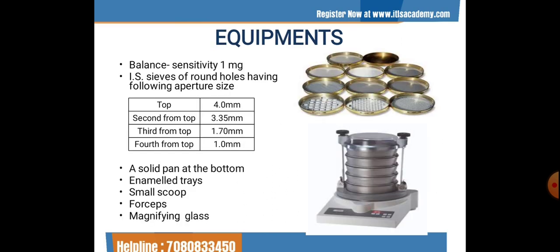The equipment needed for this experiment to collect and separate refractions from normal cereals includes: a balance sensitive to 1 mg; a set of sieves with round holes having apertures of 4.0 mm (top), 3.35 mm (second), 1.70 mm (third), and 10 mm (fourth); a solid pan at the bottom; a milled tray; a small scoop; and a magnifying glass.